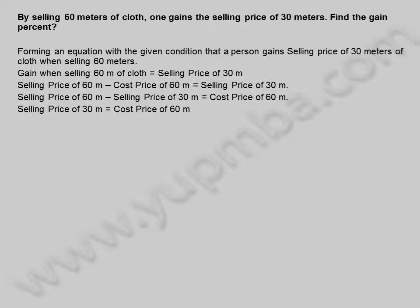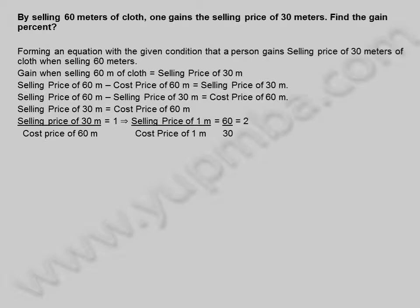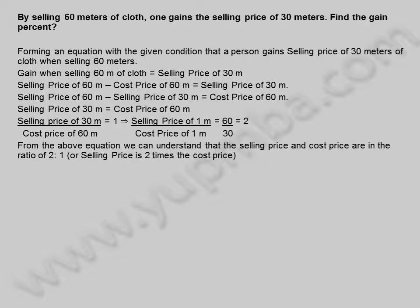Selling price of 30 meters is equal to cost price of 60 meters. Selling price of 30 meters divided by cost price of 60 meters is equal to 1, which implies selling price of 1 meter divided by cost price of 1 meter is equal to 60 by 30, which equals 2. From the above equation, the selling price and cost price are in the ratio of 2:1, or selling price is 2 times the cost price.